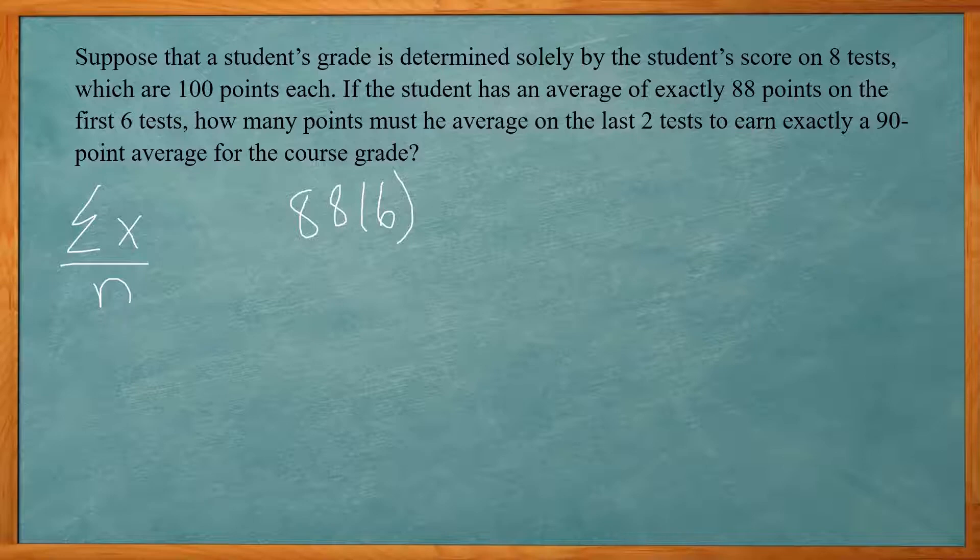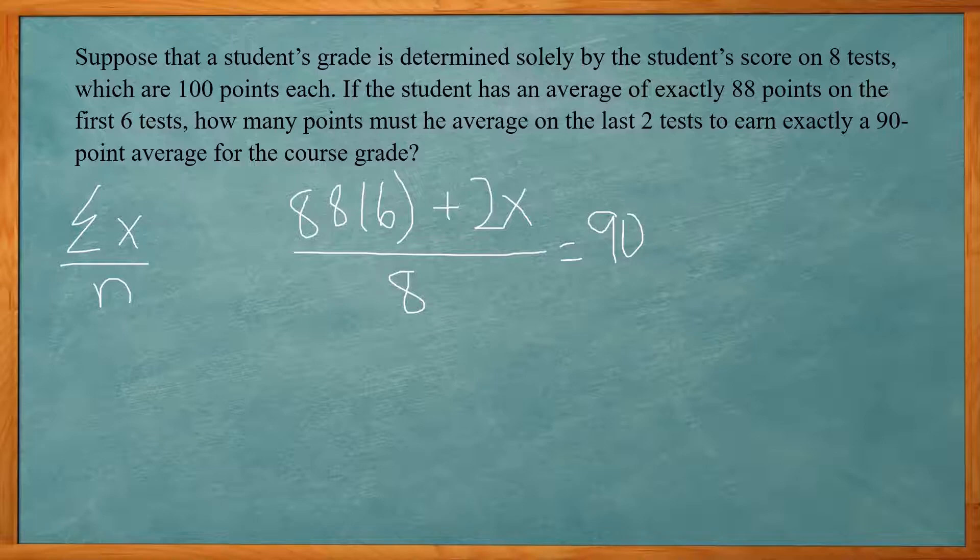And we have two more tests. So I'm going to do 2 times x. So that's going to be the average of the two tests. And we're going to divide by, we have a total of eight tests. We want the average to be 90. So I'm going to multiply both sides by 8. So 88 times 6 is 528. Plus 2x equals 720.